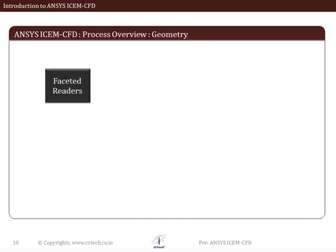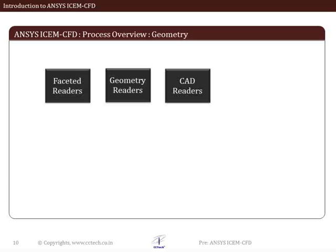If the model is available in a faceted or triangulated format, the data can be imported into ICEM CFD using the faceted data reader. There are various geometry and CAD readers or translators which can import geometry present in neutral file formats like IGS or STEP. In most cases, the translation operation causes data loss and requires CAD repair before meshing. Along with these methods, it is always possible to use direct CAD interfaces to input the geometry into ICEM CFD.